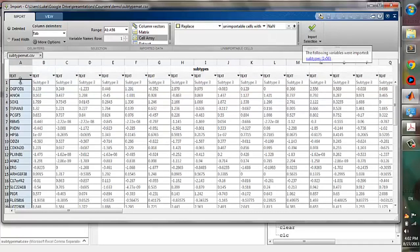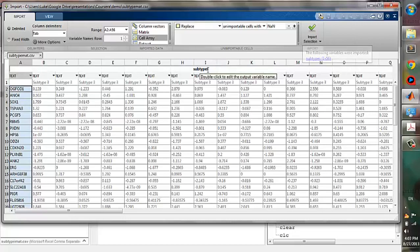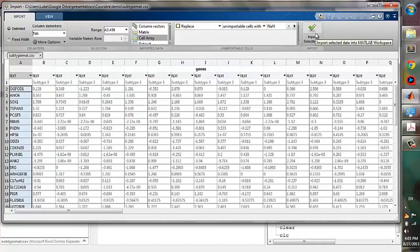The next step is to import the row labels, which are the gene symbols. We also import them as a cell array and name it as genes. The data type is already text, so we won't change that, and click import.